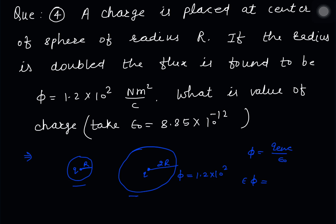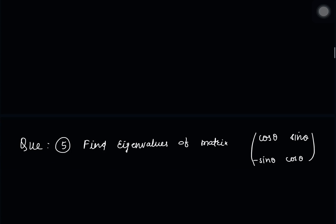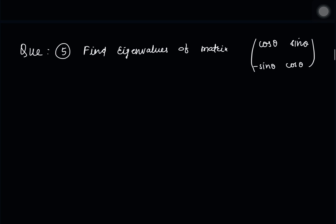The charge enclosed will be 5ε₀ times the flux value. Since the enclosed charge is the same, the flux is the same, and consequently the voltage relationship holds the same.